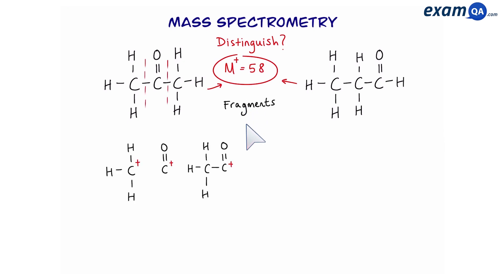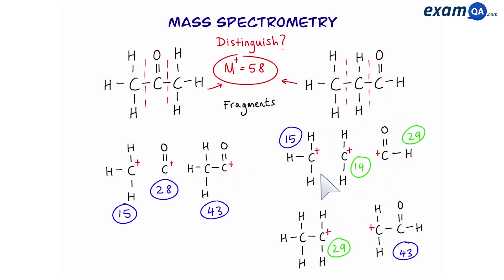So, looking at propanone, these are the three fragments that we can produce, and these are their Mz values. As for propanol, we can produce more fragments. And we can see that we have some Mz values that propanone had, but also some new, unique ones.